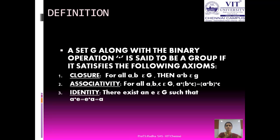Identity. If there exists an element e belonging to G such that a star e is equal to e star a is equal to a, then e is called the identity element. That is, e fixes all the elements of the set G.